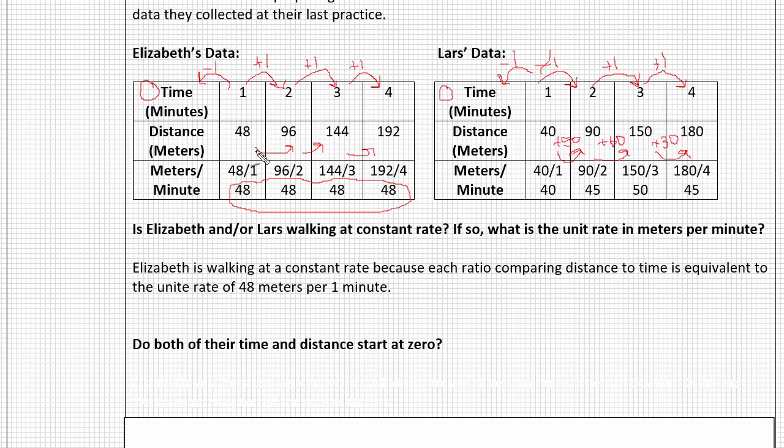However, with Elizabeth's data, I can see that she also adds 48 each time. 48 plus 48 is 96, plus 48 is 144. So we could then use that pattern, since it is consistent, and subtract 48. And doing so, 48 minus 48 is zero. So it does look like Elizabeth's time and distance start at zero, zero. With Lars, his increases at different intervals. First 50, then 60, then 130. So we can't guarantee for sure that we can backtrack, because we wouldn't know what number to use. It's not consistent increasing.